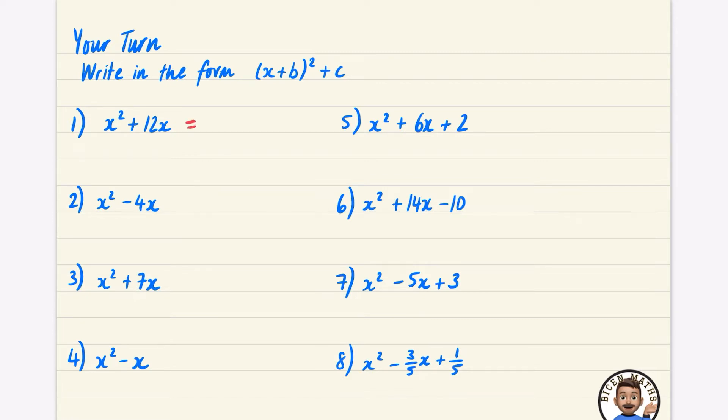For the first one, we're going to half the 12 to get 6, and subtract 6 squared which is 36.